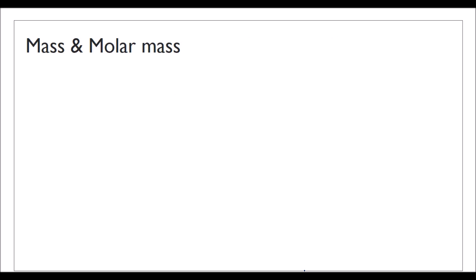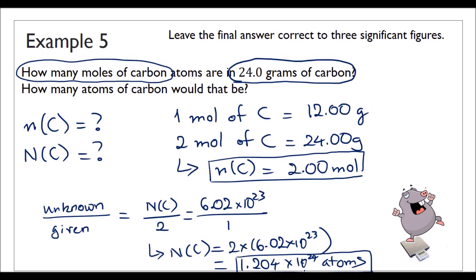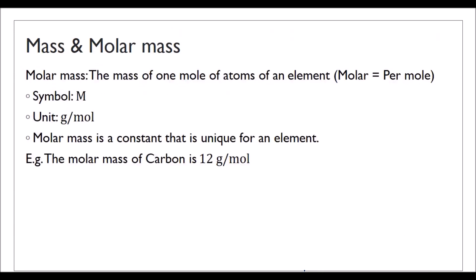There are two more letters and symbols we're going to use. First is molar mass — the mass of one mole of atoms of an element. We shorten that and call it molar mass. The symbol for molar mass is capital M, and the unit is grams per mole. This is a constant unique to each element because it has the same value as the relative atomic mass. So the molar mass of carbon is 12 grams per mole, or capital M of C equals 12 grams per mole.